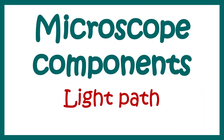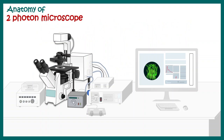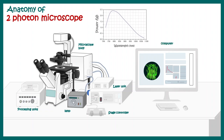Let's talk about the microscope components and light path in more detail. A typical two photon microscope has many components and can be highly customizable. There is a microscope body, a laser unit, a stage controller, a fluorescence lamp for locating the specimen, a computer system, and analog-to-digital processing units. The laser is tuned to emit wavelengths from approximately 720 nanometers to 1500 nanometers, as shown in the laser tuning curve — giving mostly red and far-red illumination.